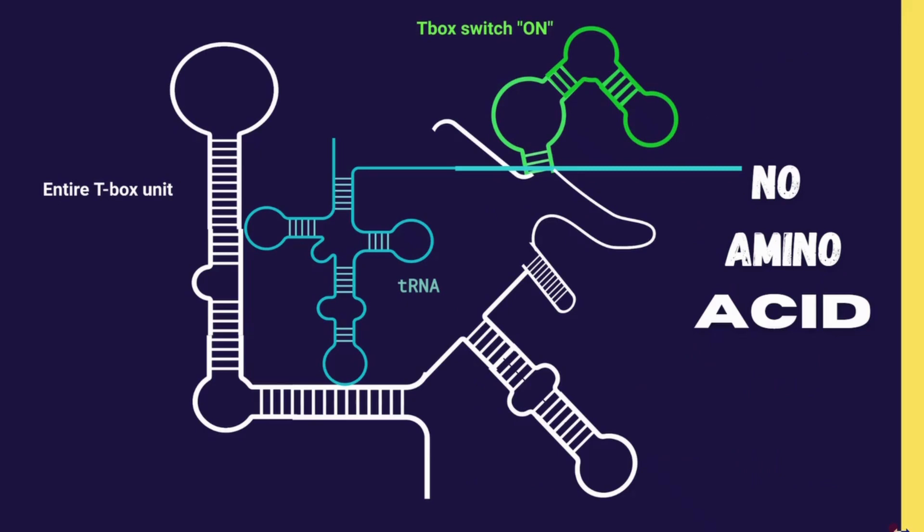When a tRNA does not have an amino acid, the t-box switch sends a signal to the cell to make more of that amino acid available. The t-box switch here is in green.